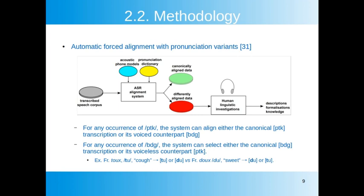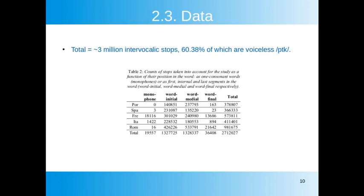For instance, a French word could be transcribed canonically, or alternatively transcribed as either its voiced or voiceless variant. This allows us to investigate not only voicing but also resistance to devoicing. In total, the corpora and methodology allow us to investigate the realization of almost three million intervocalic stops, 60% of which are voiceless.